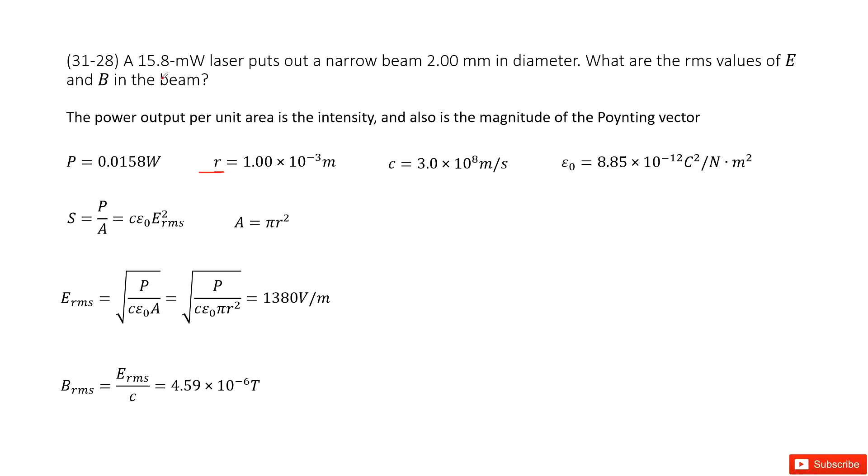Looks like we need to find the rms, the electric field and the B field for this laser. This laser is an EM wave and what is given? It gives you the power and also the radius. They tell you it's a circle and the radius is given.